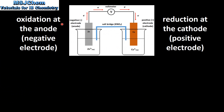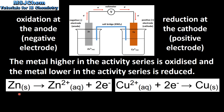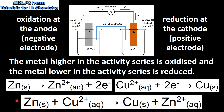Oxidation occurs at the anode, which is the negative electrode, and reduction occurs at the cathode, which is the positive electrode. The metal that is higher in the activity series is oxidized, and the metal lower in the activity series is reduced. Because Zinc is higher in the activity series than Copper, the Zinc is oxidized and the Copper 2+ ions are reduced. Here we have the net ionic equation for the reaction.